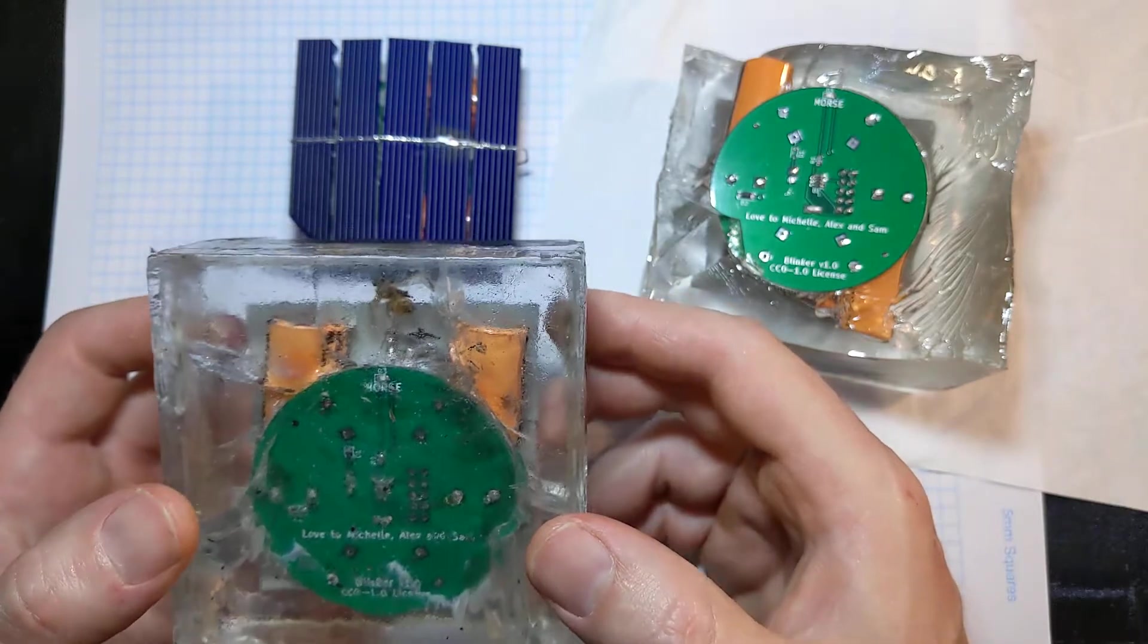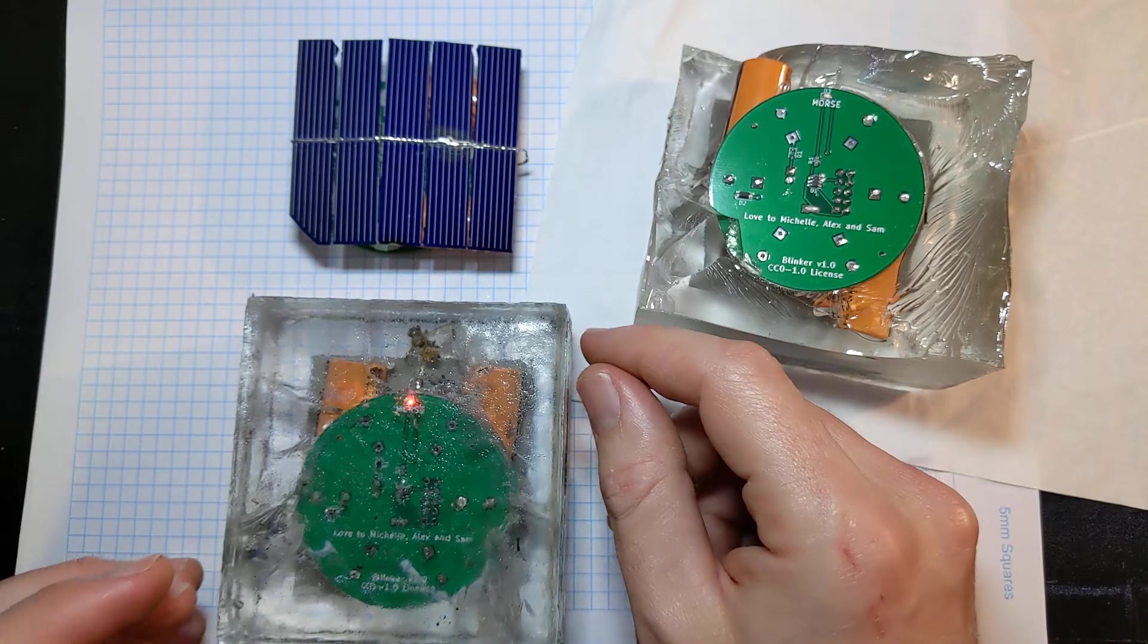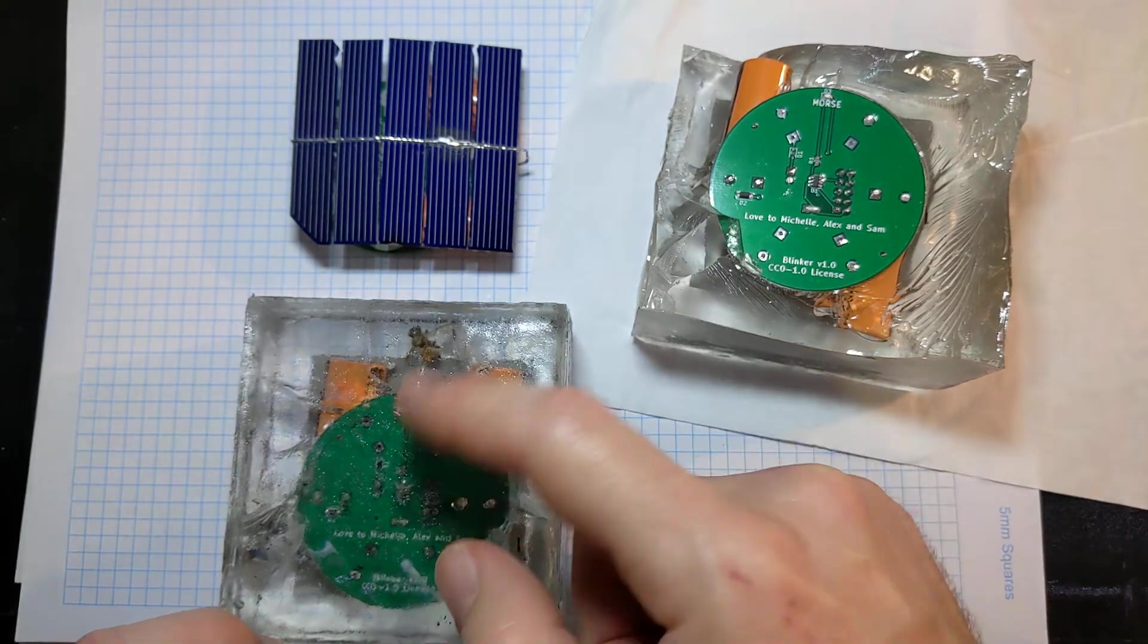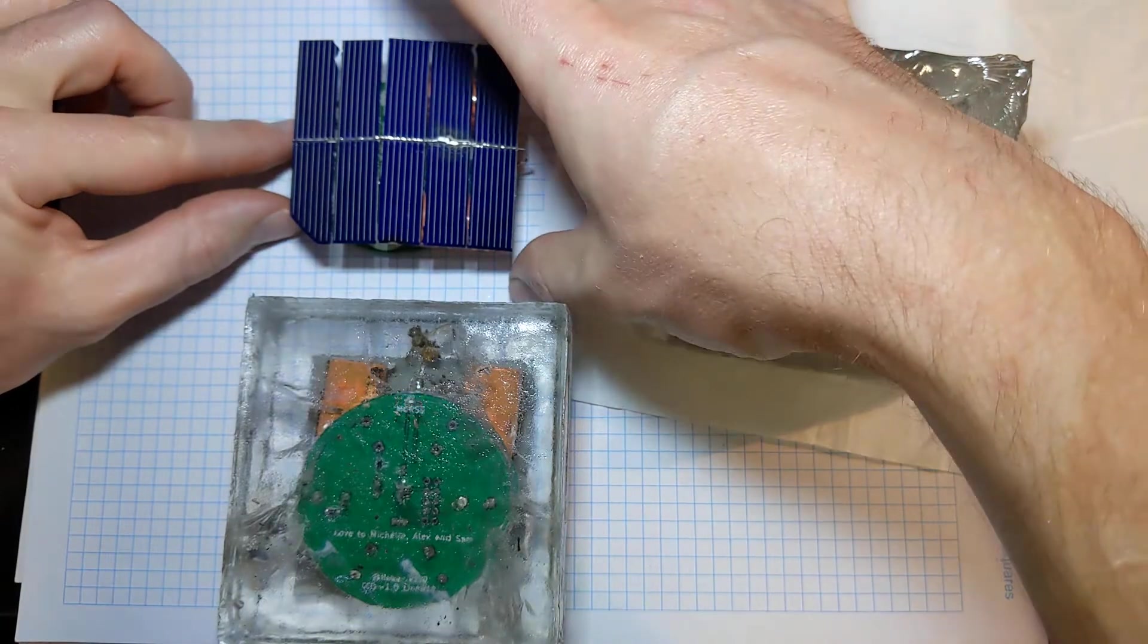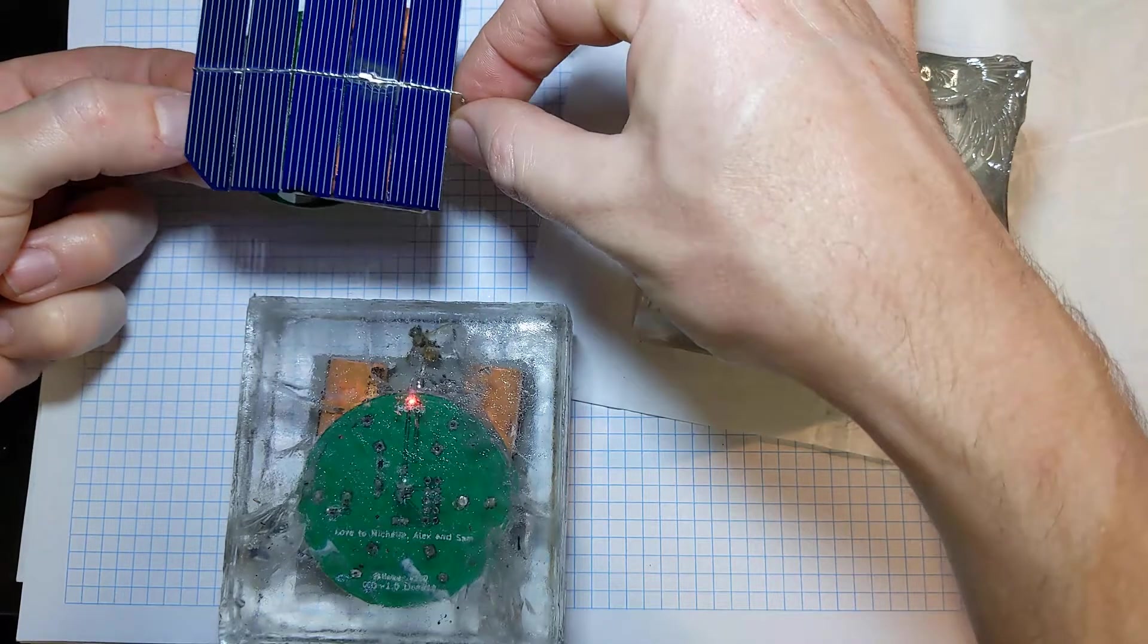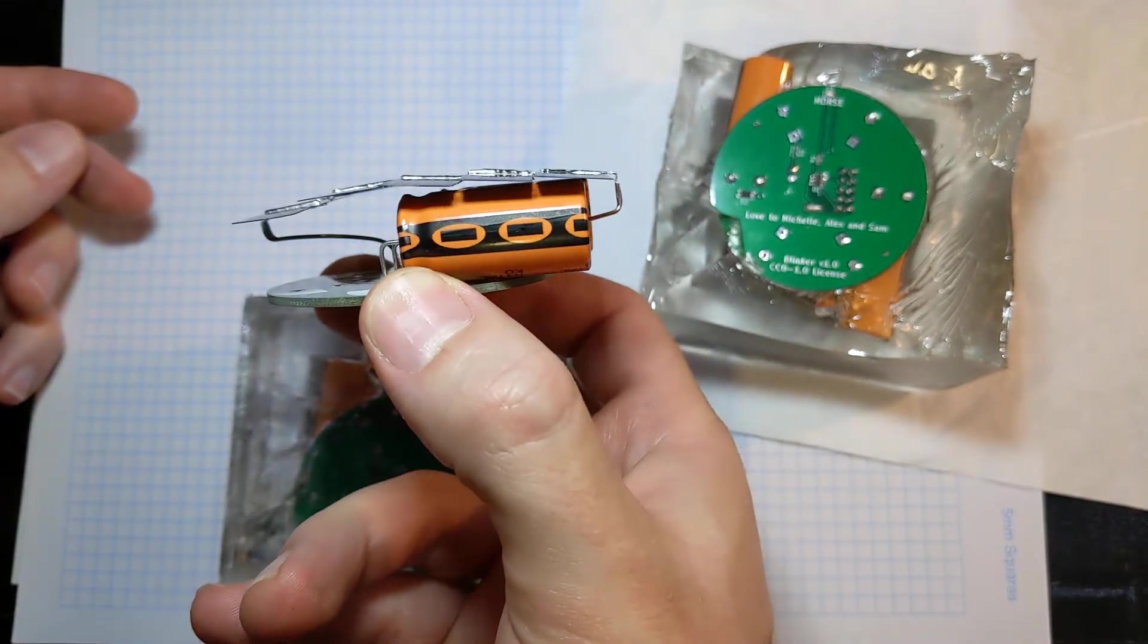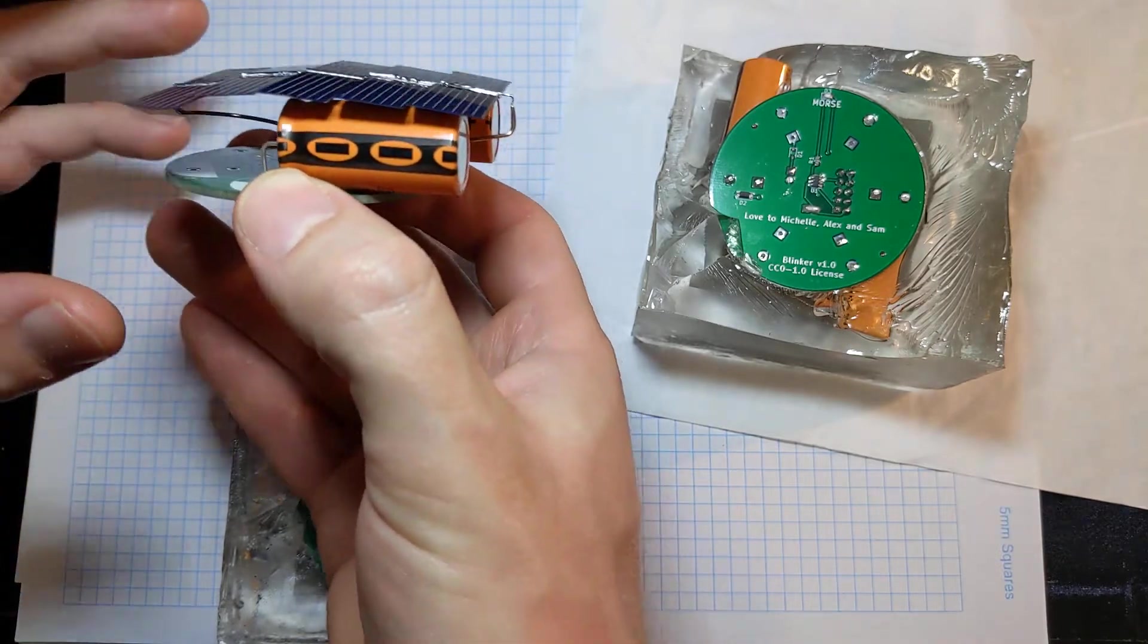So this one here is number three. It hasn't been powered up yet. So this is almost identical in construction to this one, so it's got some stout copper wires. Let me just pick this up around the camera very carefully. It's got some stout copper wires that stand off from the PCB that lock the whole thing in position. There's still a bit of flex in everything.